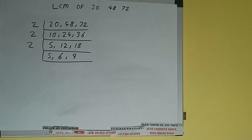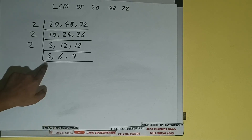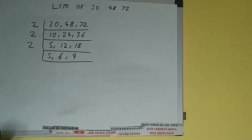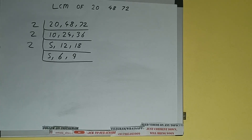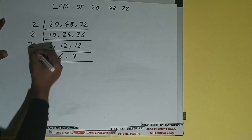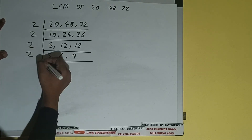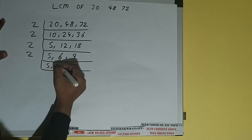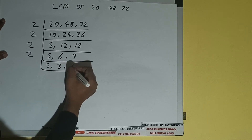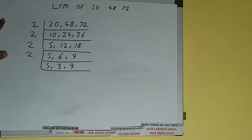Now if we check, only the second number is divisible by 2, not the first and the last one. So we'll divide only the second number by 2, and we'll be having 5, 3, 9.